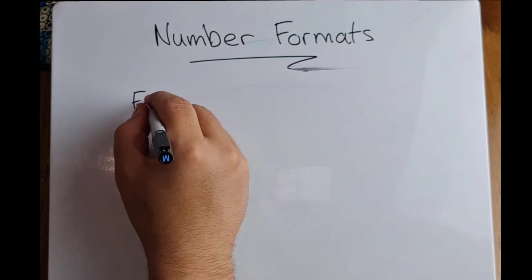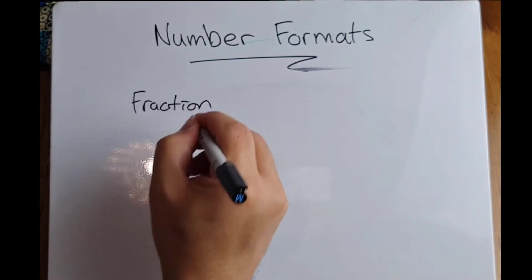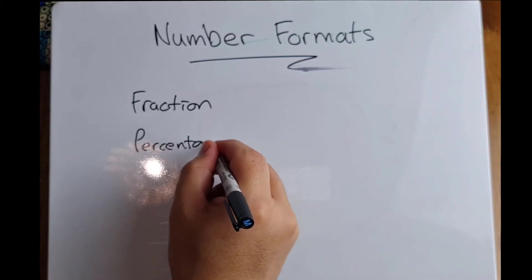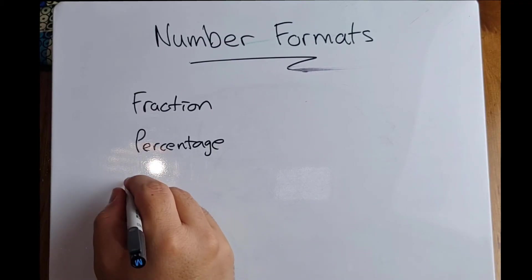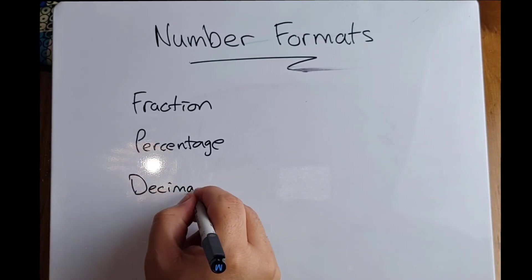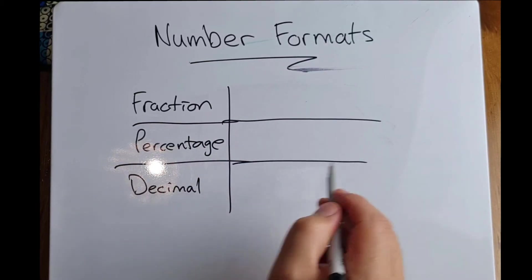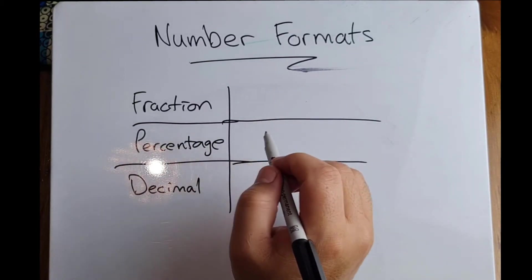First of all, it can be written as a fraction. It can be written as a percentage, and it can be written as a decimal. So let's look at each one of these quickly.